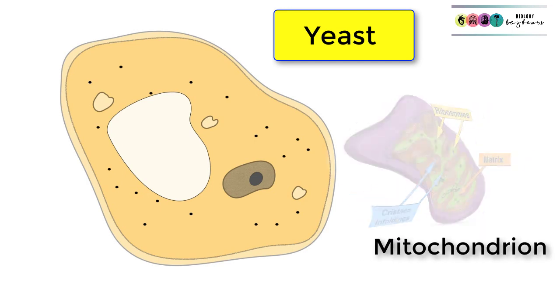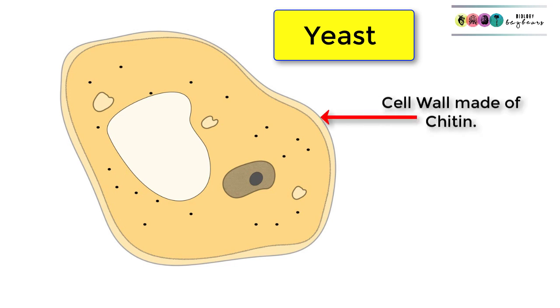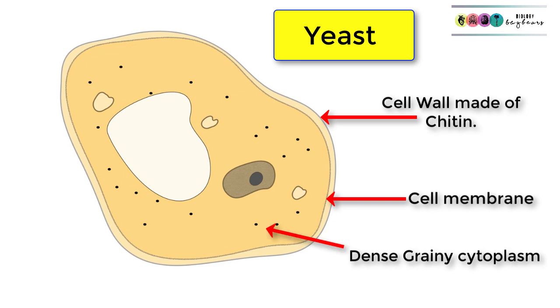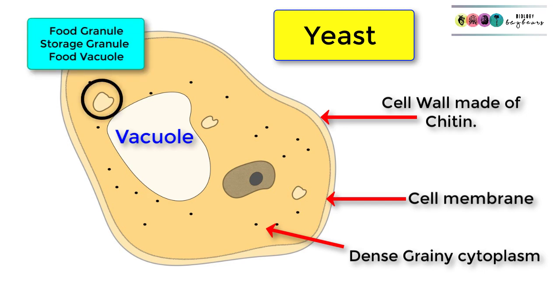What makes a yeast part of the fungus family is the fact that it has that cell wall made of chitin, so make sure you draw that in first. Inside this we have the cell membrane and then the dense grainy cytoplasm that you associate with yeast cells. Yeast cells have these large vacuoles and these smaller structures for food storage, sometimes called food granules or storage granules and sometimes food vacuoles.